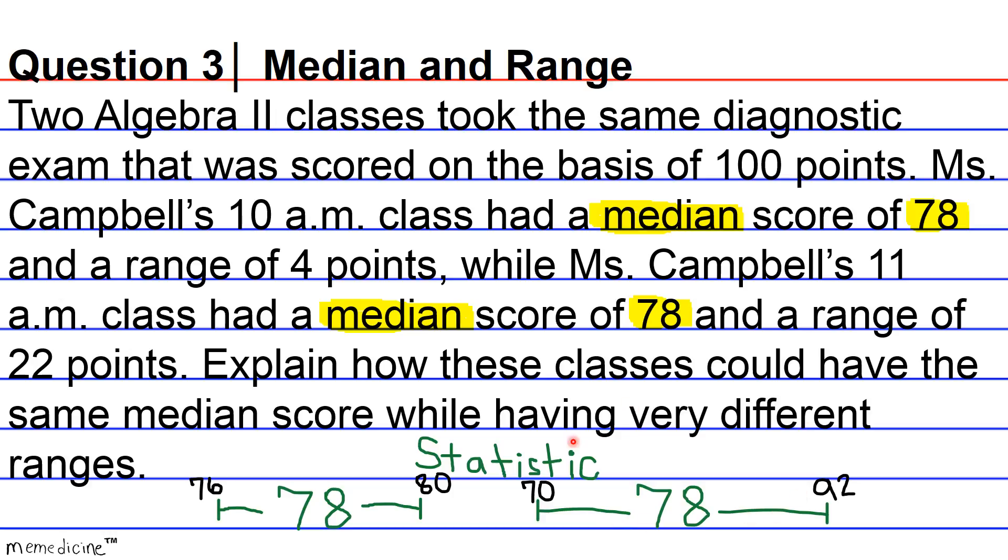And for the last example, I want you to know something really important. The median of a set of data does not have to be the perfect central midpoint, meaning it doesn't have to be the number perfectly halfway between 78 and 92. It's just going to be the number that falls in the middle of 22 different data points.